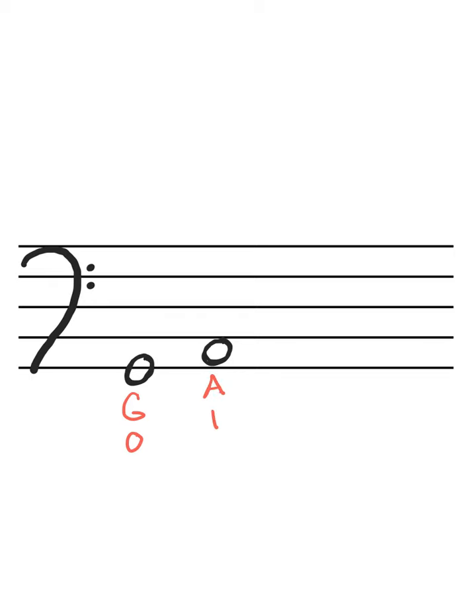Now remember in the music alphabet, our letters only go up to G and then if you need to keep going higher, the letters start back over at A. So that's why it goes from G to A and not G to H or something like that.